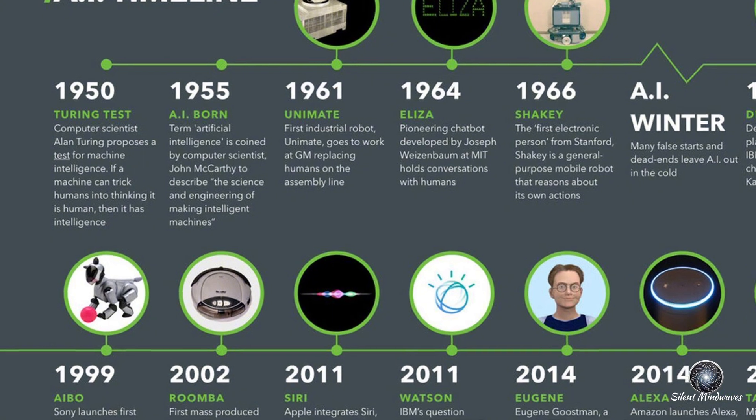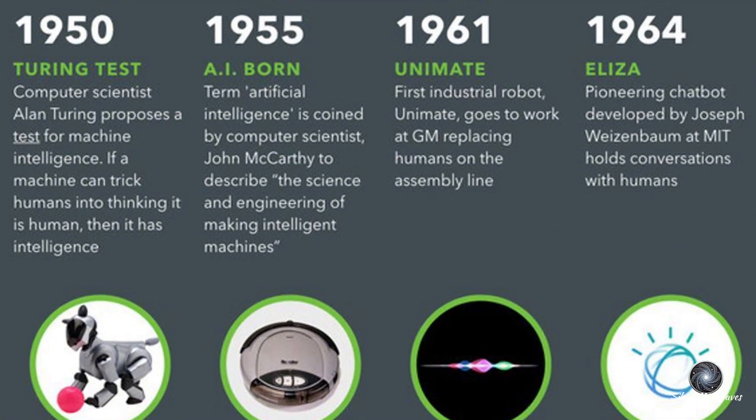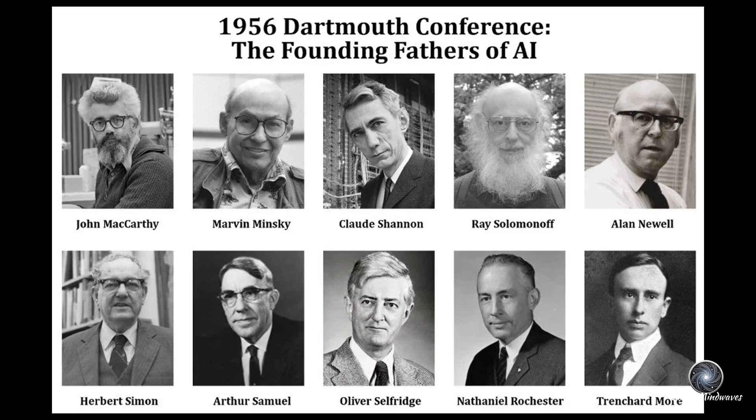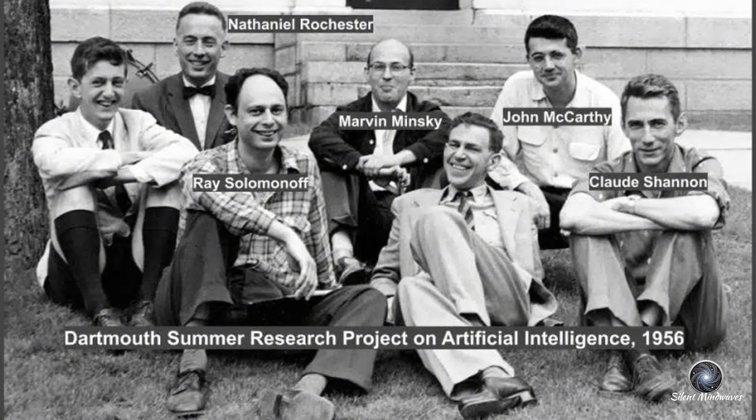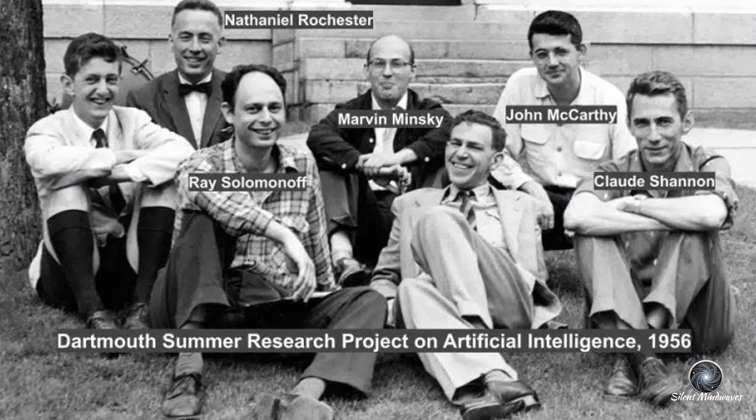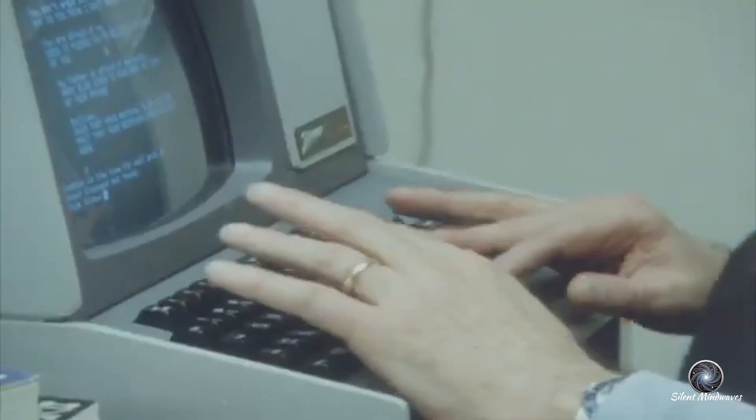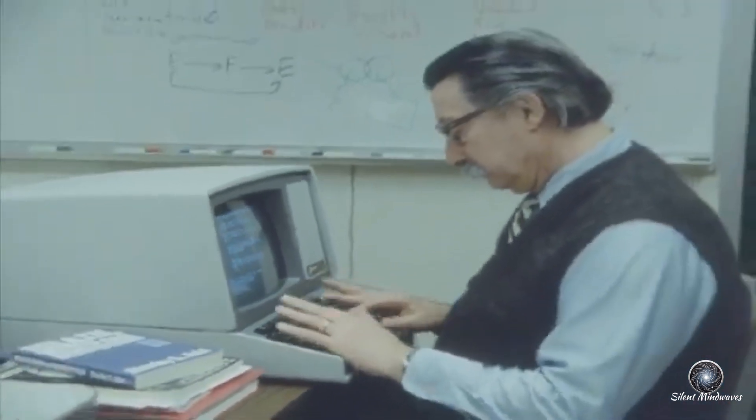The birth of AI. AI isn't as new as you might think. It all began in the 1950s when researchers started wondering, can machines think? The term artificial intelligence was coined in 1956 at a conference where scientists laid the foundation for what AI could become. One of the earliest AI programs was ELIZA, a chatbot developed in the 1960s. It could simulate a conversation by recognizing keywords, essentially the great-grandparent of today's Siri and Alexa.